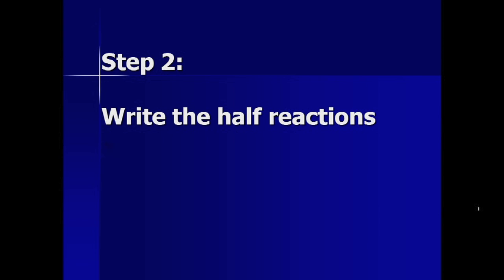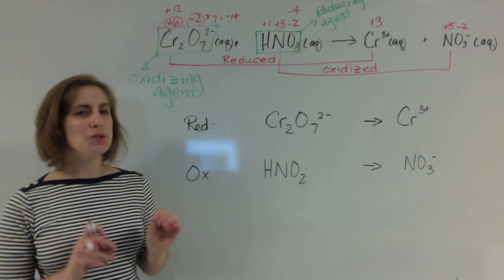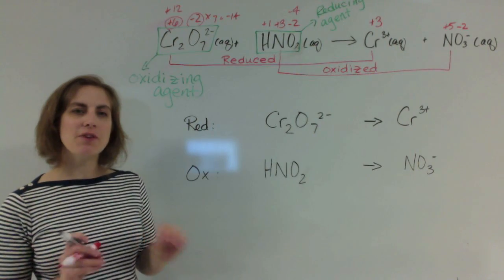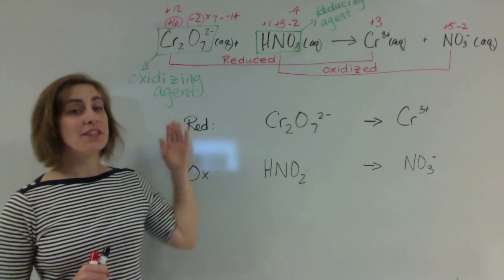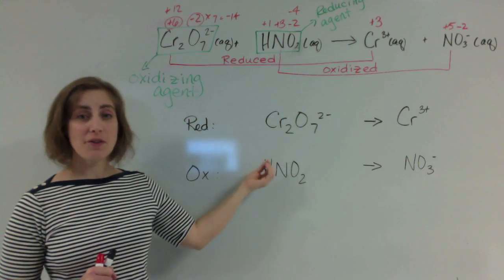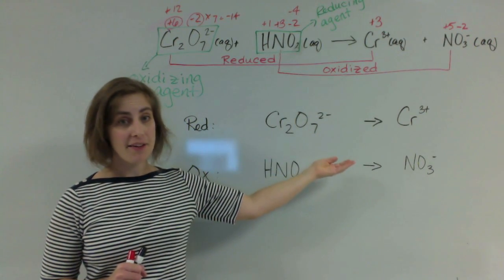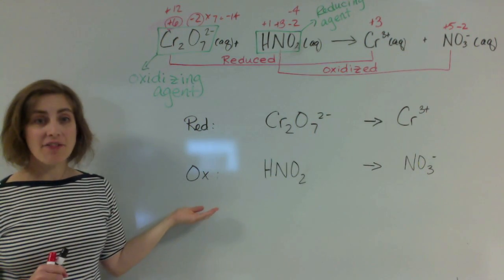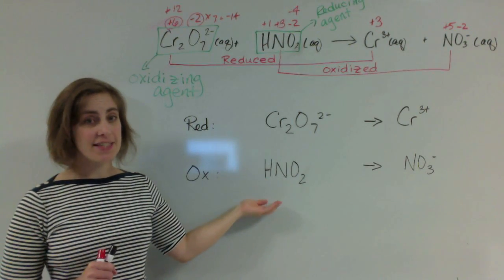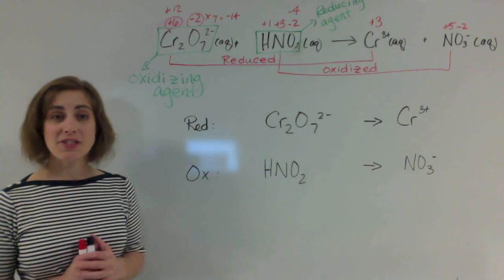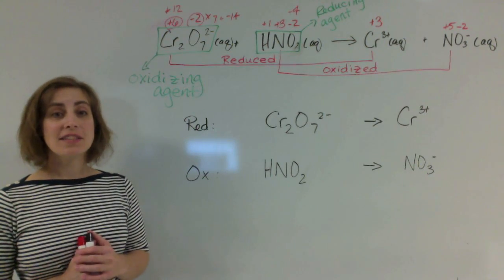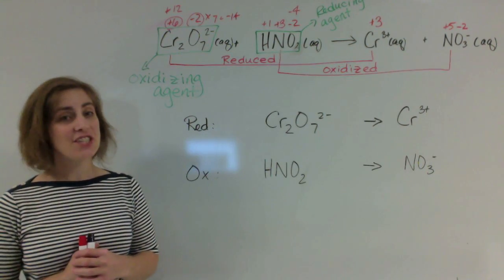Step 2 is to go ahead and write the half reactions. Half reactions break the oxidation and reduction parts up into two partial reactions that let us really focus on those moving electrons. In this case, the reduction half reaction is going to be the dichromate becoming the chromium 3 ion. And the oxidation half reaction is going to be the nitrous acid becoming the nitrate ion. Now that we have the two half reactions, let's go ahead and balance them. That actually is step 3.